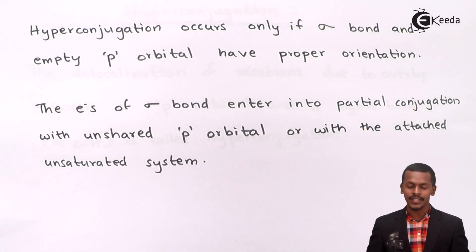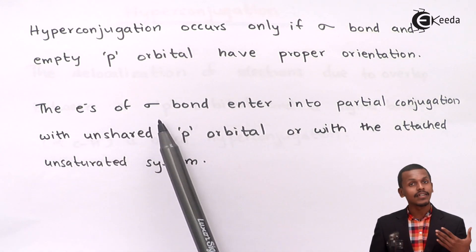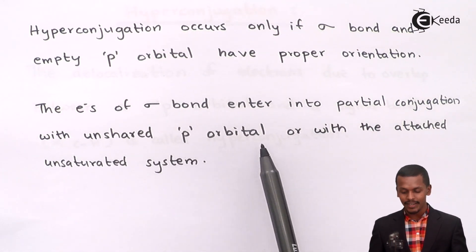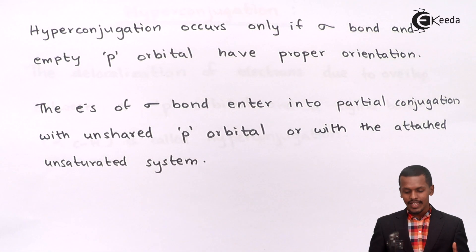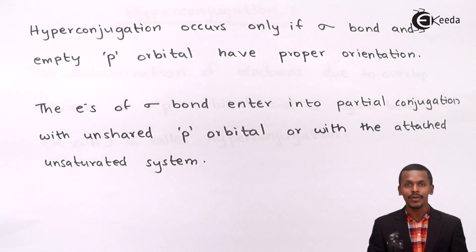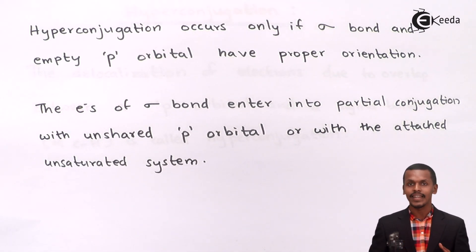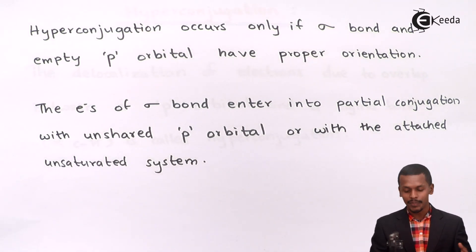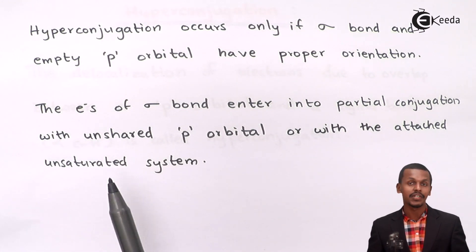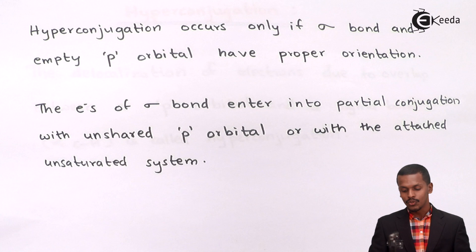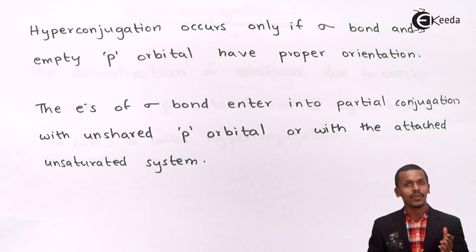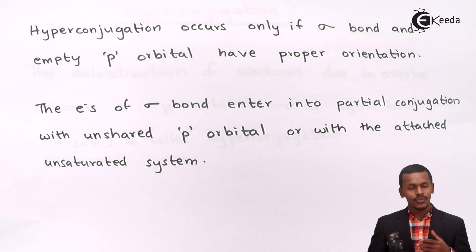The electrons of the sigma bond enter into partial conjugation with an unshared p orbital or with an attached unsaturated system. So the electrons from the sigma bond can also delocalize to a conjugated system consisting of unshared p electrons attached to an unsaturated system. Let us now understand how hyperconjugation occurs with an example.